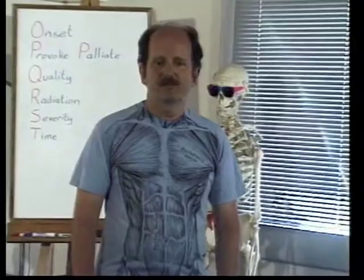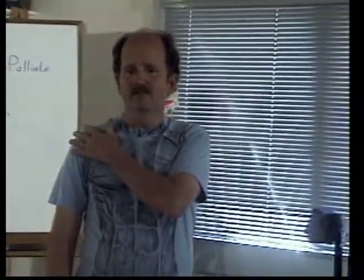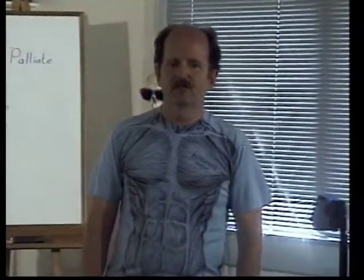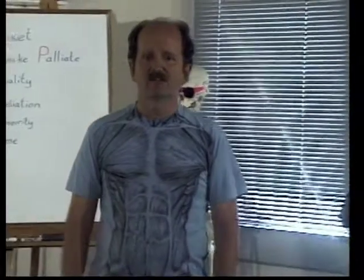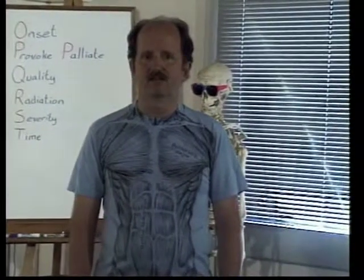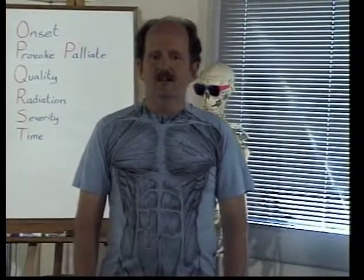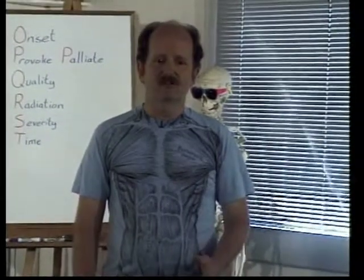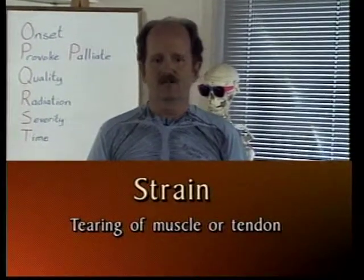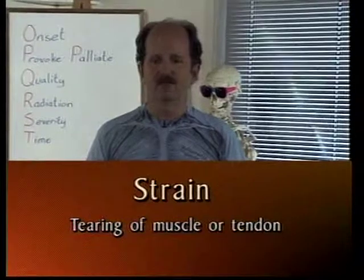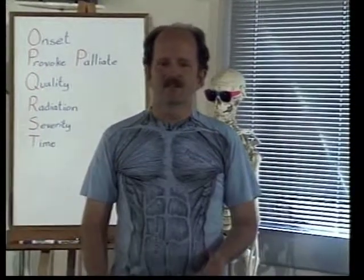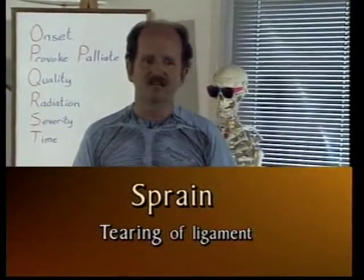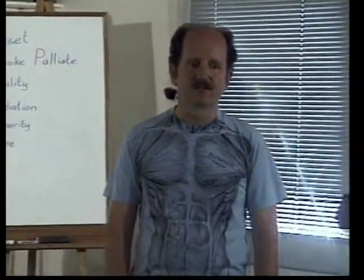When a person has pain around a joint, it can either be from a problem in the joint capsule or ligaments, or it can be a problem in the muscles themselves. When there's a tearing in muscle or tendon, that's called a strain — with a T. When there's a tearing in ligaments, that's called a sprain — with a P. It's important to know that difference.